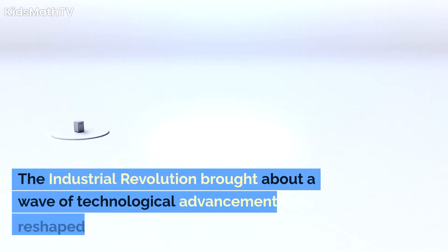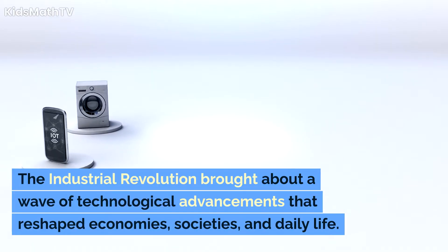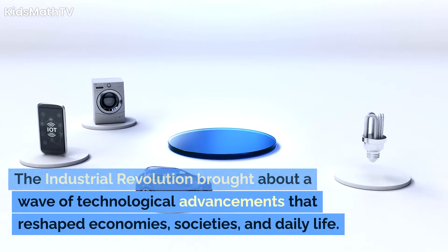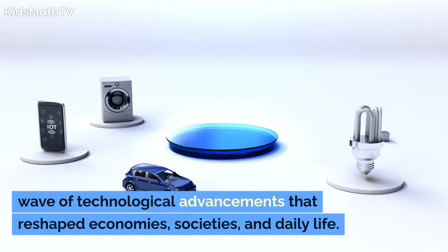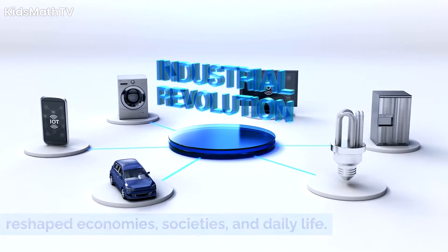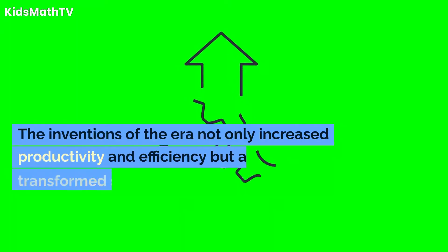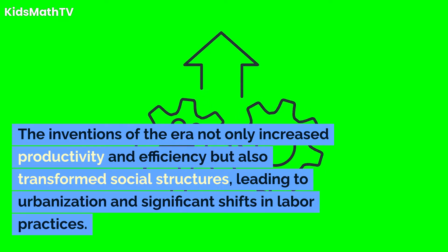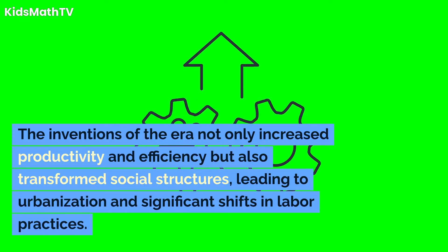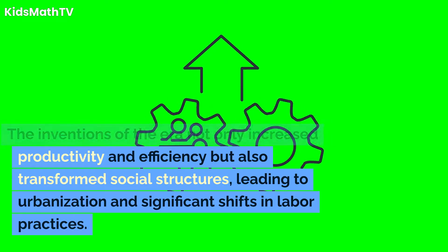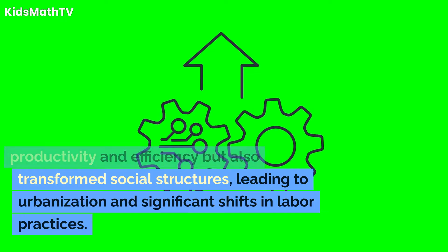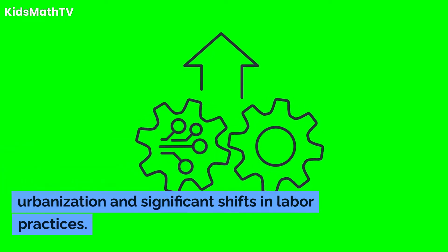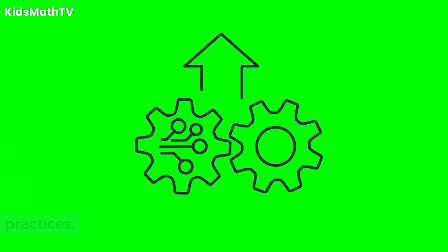The Industrial Revolution brought about a wave of technological advancements that reshaped economies, societies, and daily life. The inventions of the era not only increased productivity and efficiency but also transformed social structures, leading to urbanization and significant shifts in labor practices.